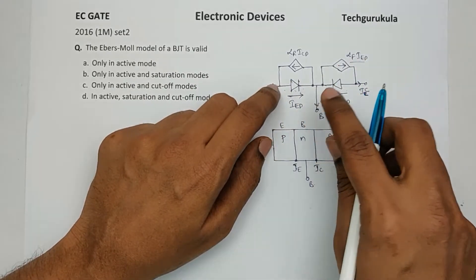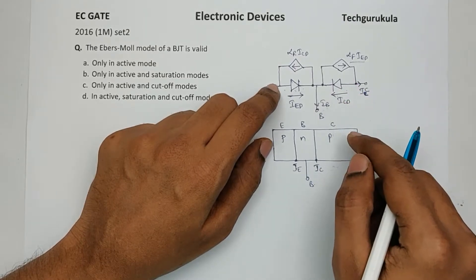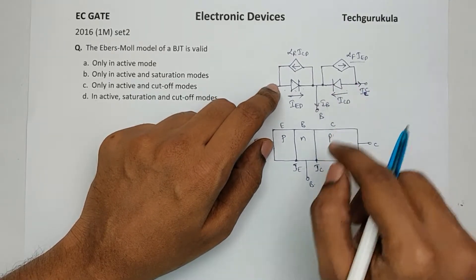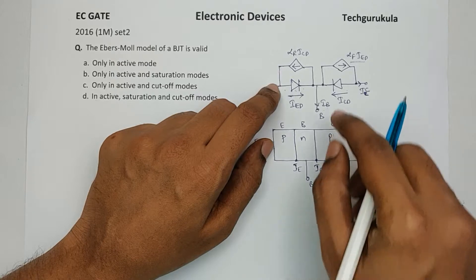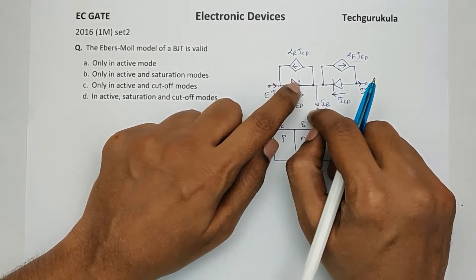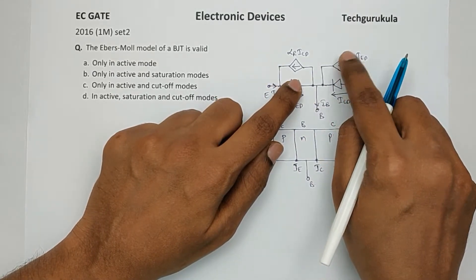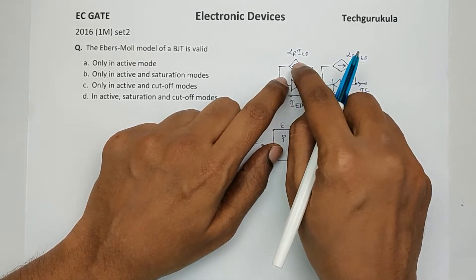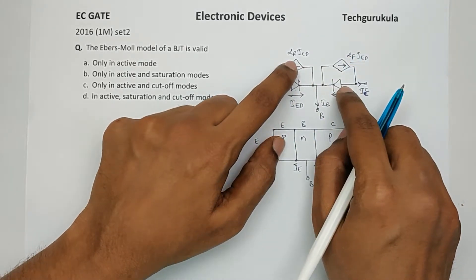And if you see the other way, in inverse active mode, this diode will be forward biased, the JC. And in that case, this diode will be inactive because it will be reverse biased. Hence this will not be there. This diode and this current dependent current source will be present in inverse active mode.